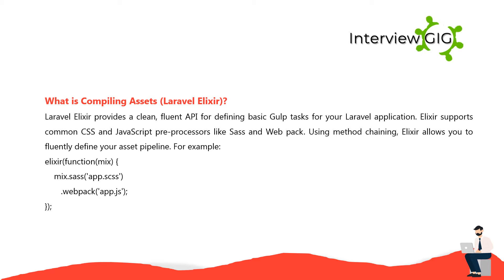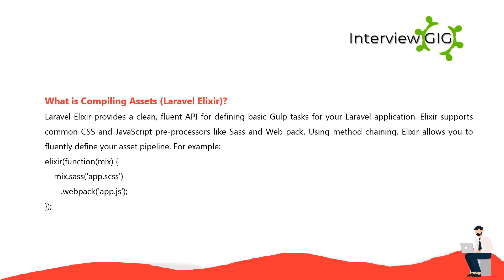What is compiling assets? Laravel Elixir provides a clean, fluent API for defining basic build tasks for your Laravel application. Elixir supports common CSS and JavaScript preprocessors like Sass and Webpack. Using method chaining, Elixir allows you to fluently define your asset pipeline. For example: mix.sass('app.scss').webpack('app.js').